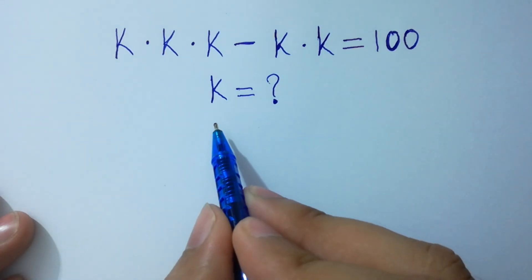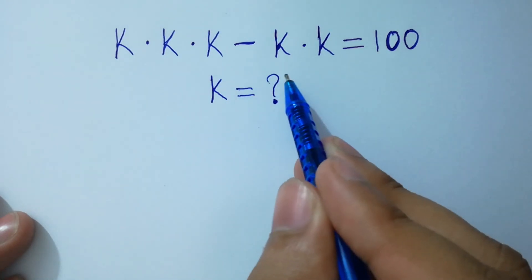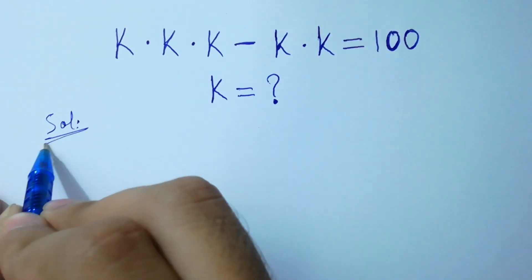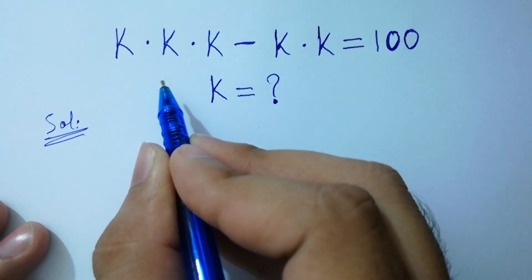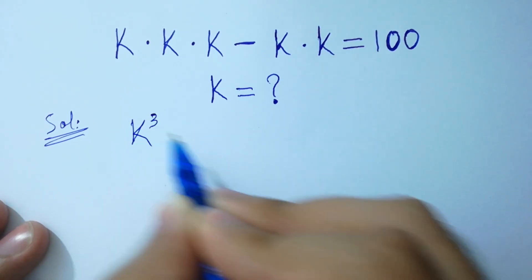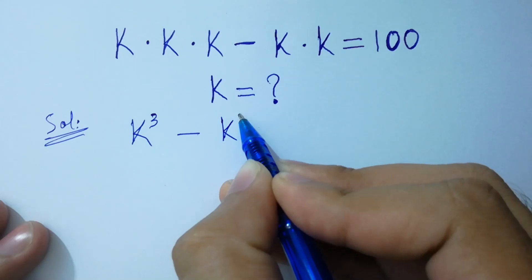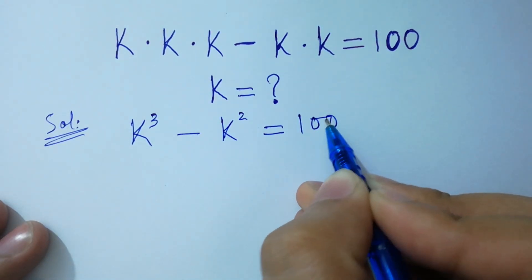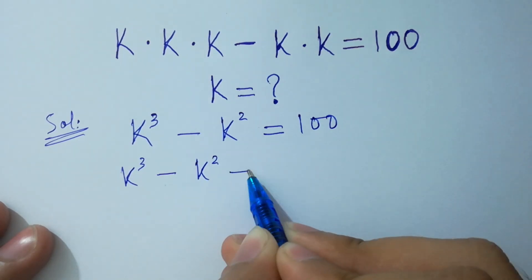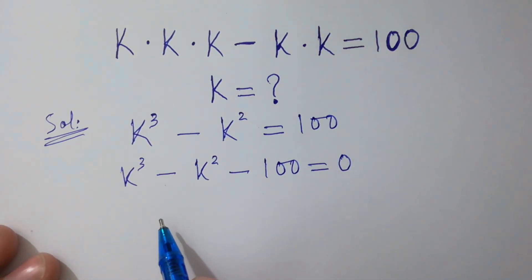Hello friends, find the value of k if k times k times k minus k times k equals 100. Let's solve it. k times k times k is the same as k cubed, minus k times k is the same as k squared, equal to 100. So we have k cubed minus k squared minus 100 equals 0.